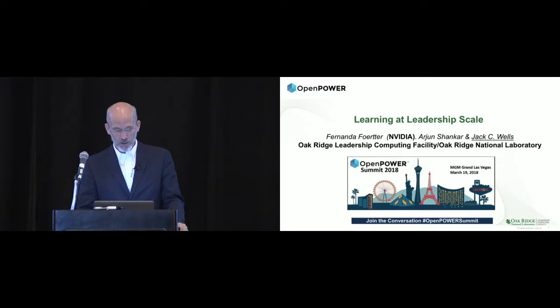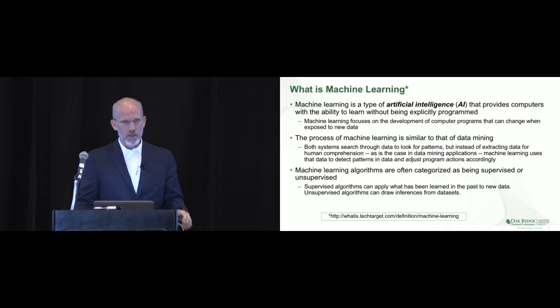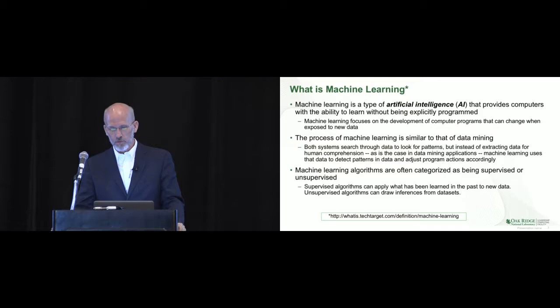So what is machine learning? Machine learning is a type of artificial intelligence that provides computers with the ability to learn without being explicitly programmed. Machine learning focuses on the development of computer programs that can change when exposed to new data.